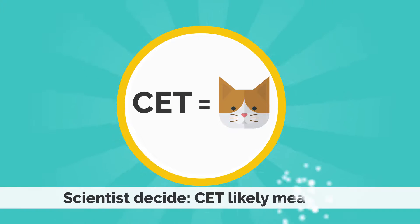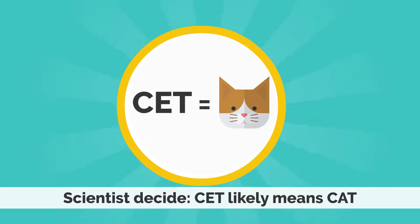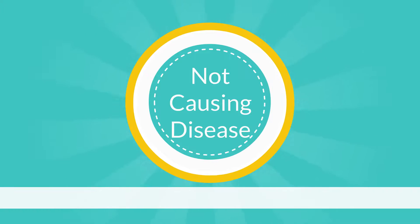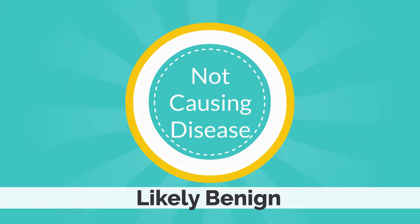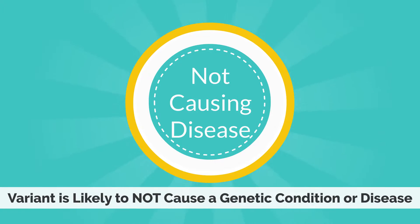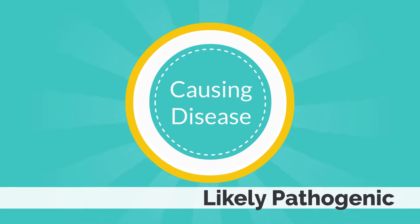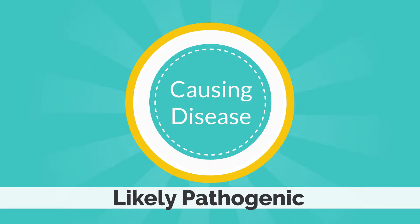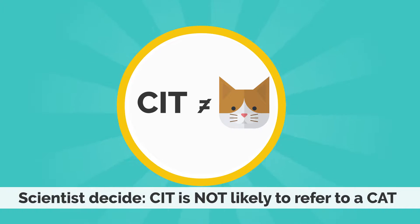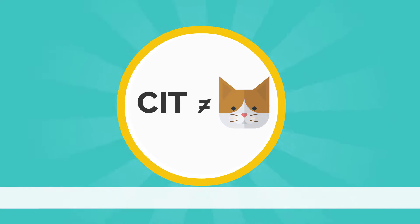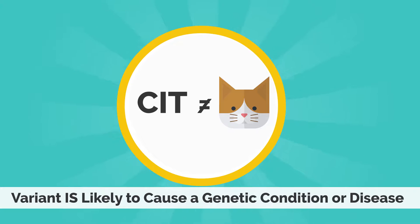For example, scientists might decide that c-e-t most likely means "cat" in DNA. This means that the variant is likely benign, or likely to not cause a genetic condition or disease. Other variants might be reclassified as likely pathogenic — for example, scientists might decide that c-i-t is not likely to refer to a cat. This means that the variant is likely to cause a genetic condition or disease.